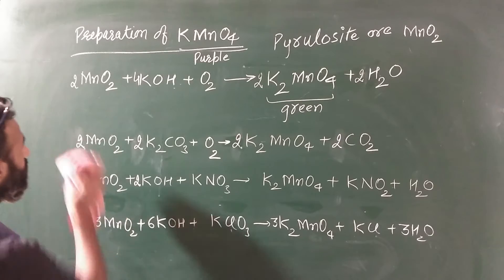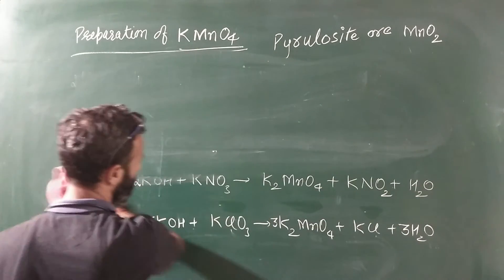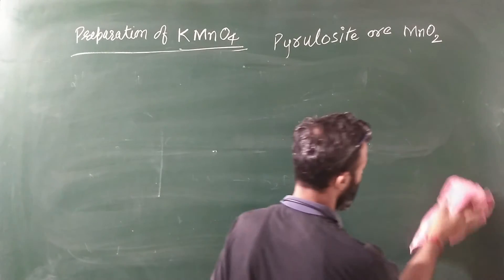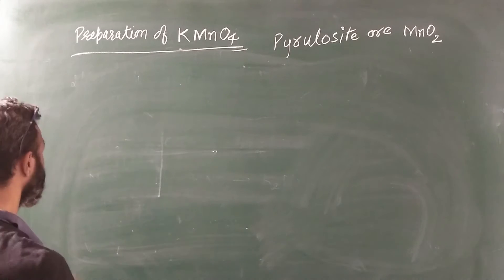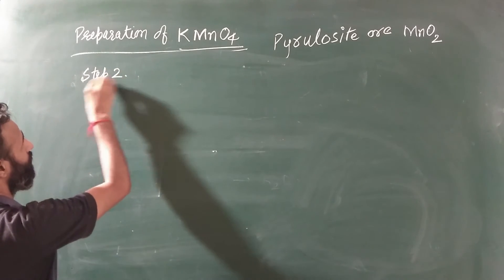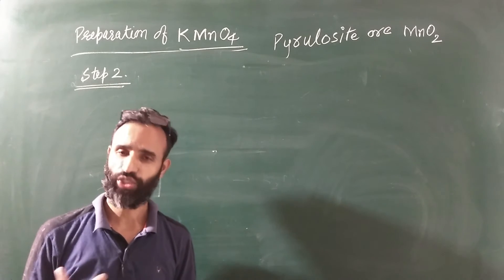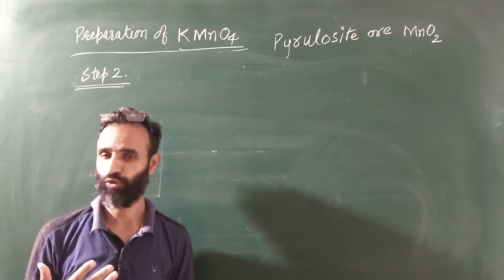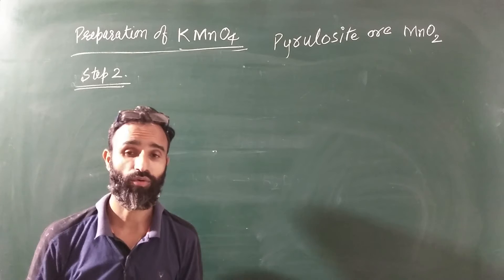After getting K2MnO4, that is potassium manganate compound, now you can use the second step. Potassium manganate undergoes electrolytic oxidation. If we use electrolytic oxidation, it undergoes disproportionation giving MnO4 negative and MnO2.